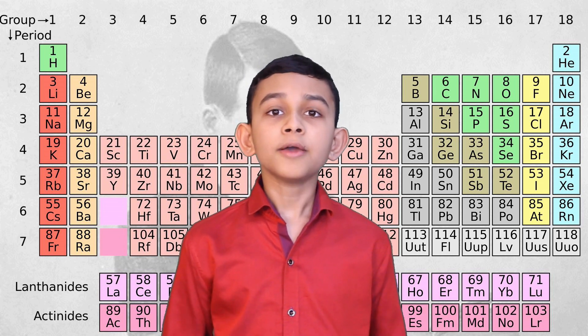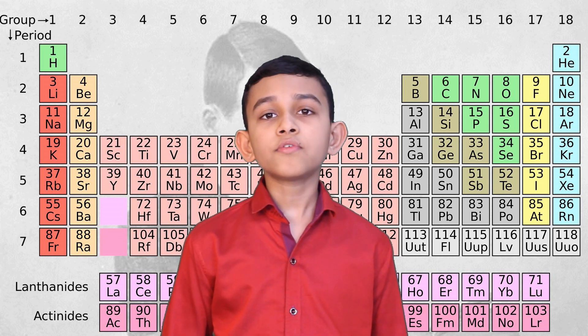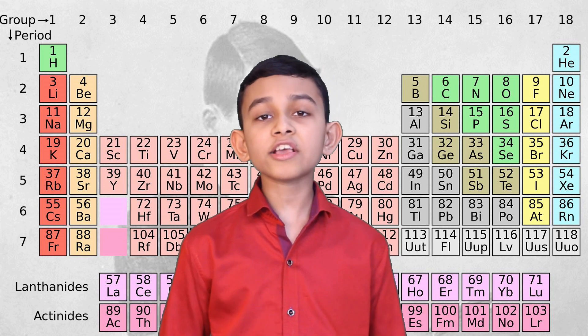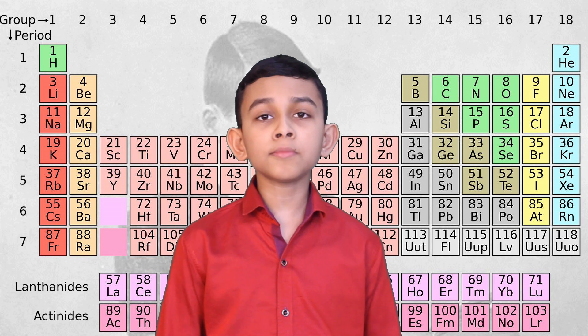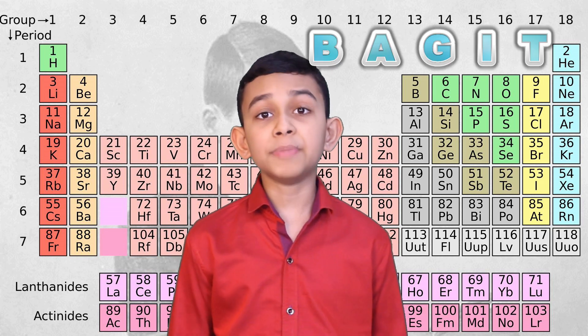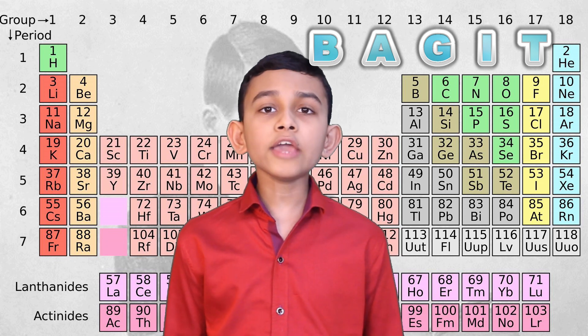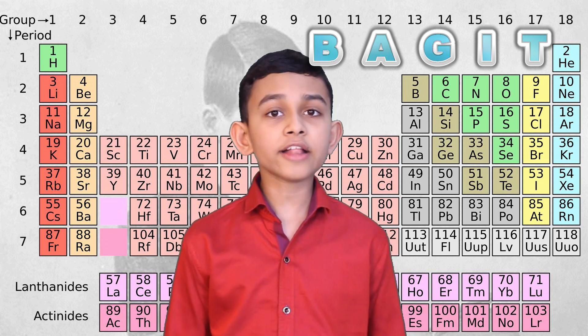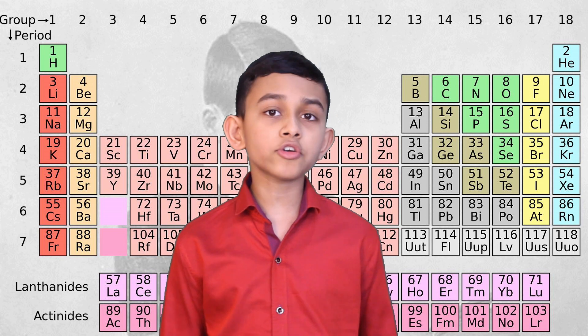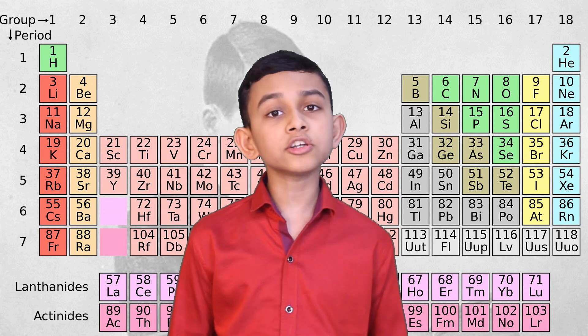Another way is by mnemonics. For example, for memorizing group 13, we can use the mnemonic BAGIT: B for boron, A for aluminum, G for gallium, I for indium, and T for thallium. You can make your own mnemonics for all the other groups.